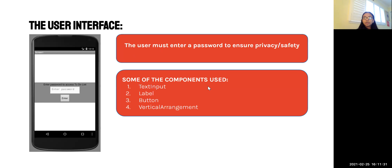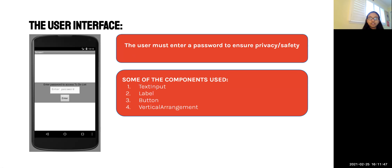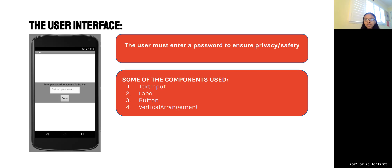Here is an example of how the user interface looks. You don't want random people coming to your phone and looking at private tasks. So if someone were to access your to do list app, they'd need to enter a password and hit enter. This ensures that the user's work and privacy is protected and no one else can access it. Some of the components used here are text input, label, button, and vertical arrangement.